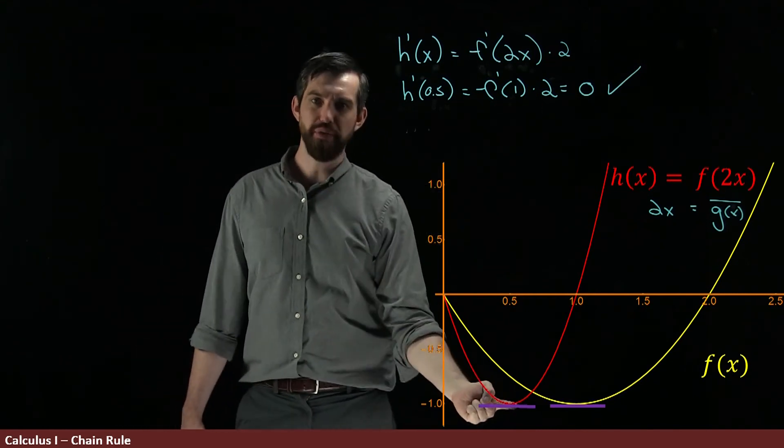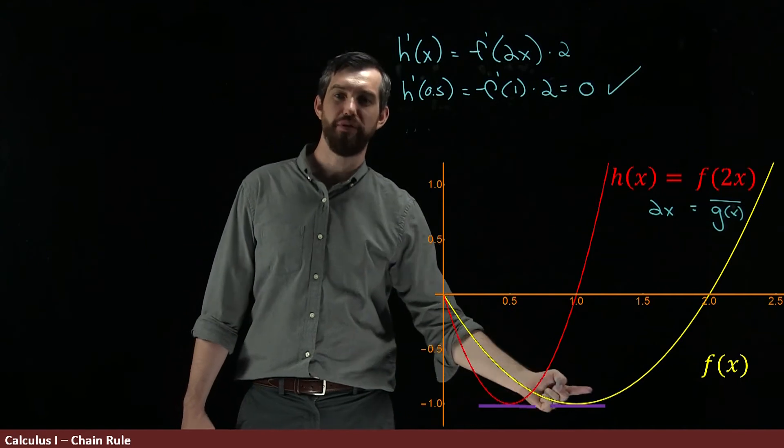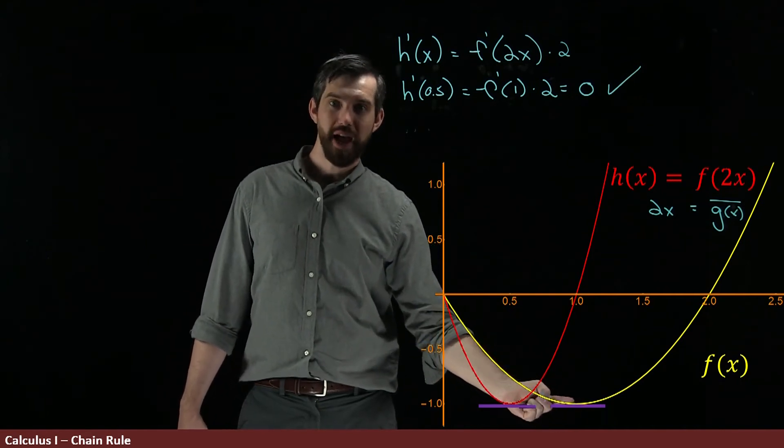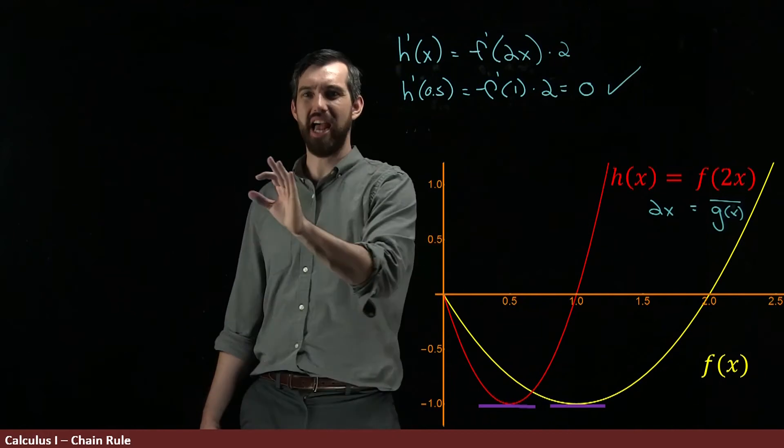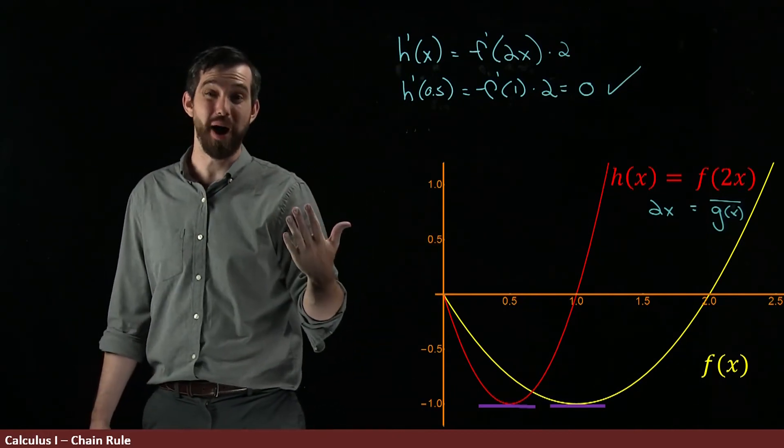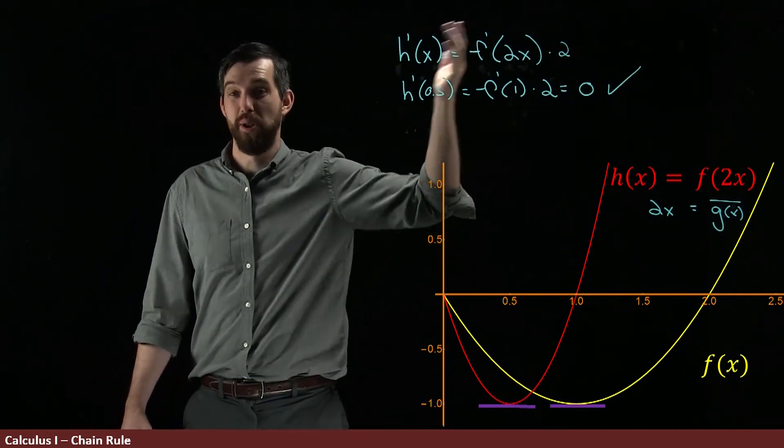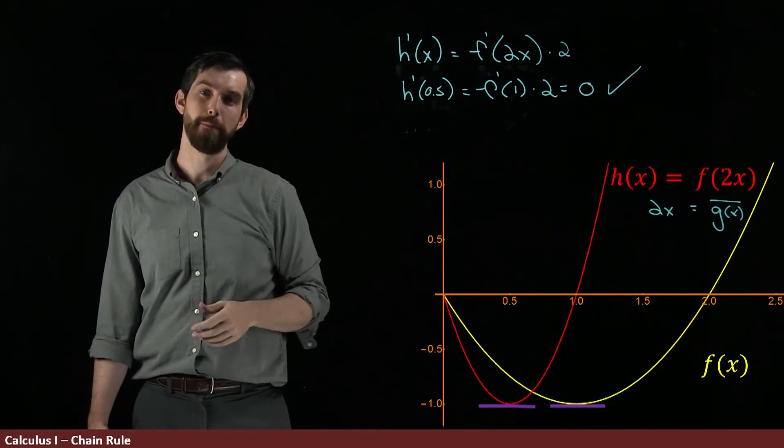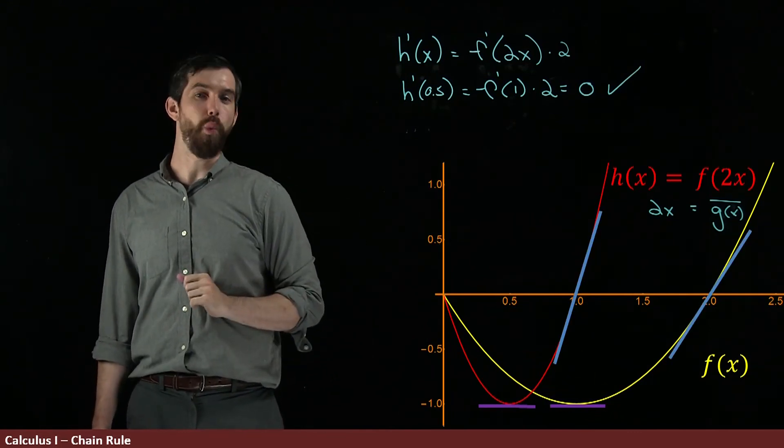So here, to figure out the derivative down here of the h, what I did was I looked at the derivative of the f at twice a half, at 1, and then I multiplied by 2. And in this example, the multiplication by 2 doesn't do much because it's just taking a 0 and multiplying it by 2, I get another 0. But let me look at a different point. Let me look at what happens at 1.